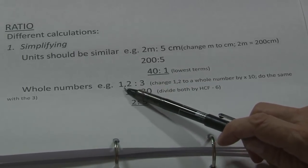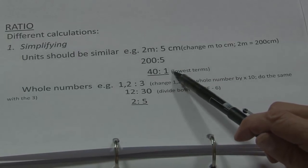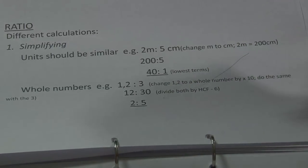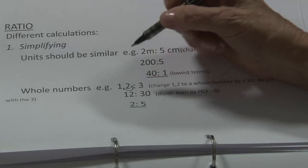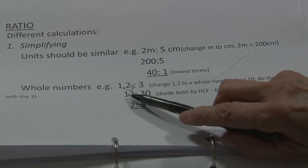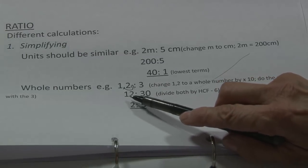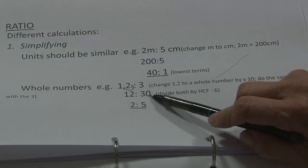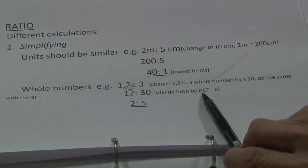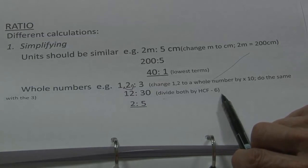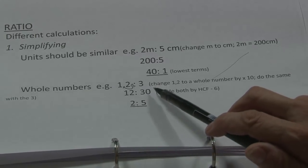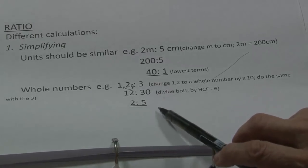When you get a decimal like 1.2 to 3, multiply both by 10 to get whole numbers: 1.2 times 10 gives 12, and 3 times 10 gives 30. So it will be 12 to 30. Divide by the highest common factor, which is 6: 12 divided by 6 gives 2, and 30 divided by 6 gives 5. So the simplified ratio is 2 to 5.